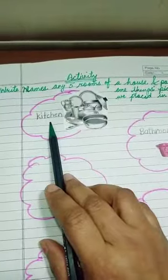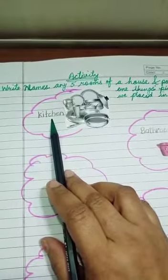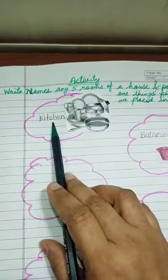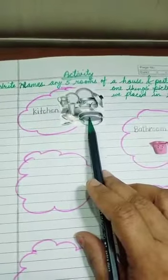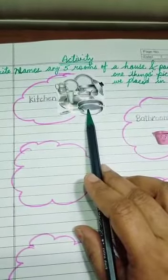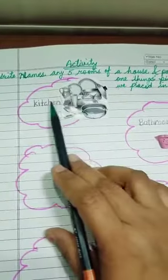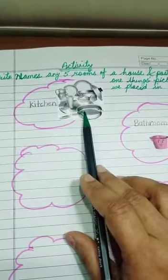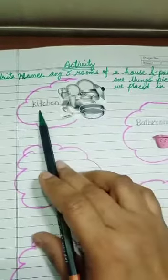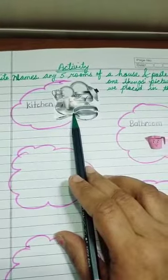Now look here, what I have written is kitchen. This is the room of our house. And these are utensils. Utensils are bartan. What do we keep in the kitchen? Bartan. So we will paste the utensils with the kitchen.